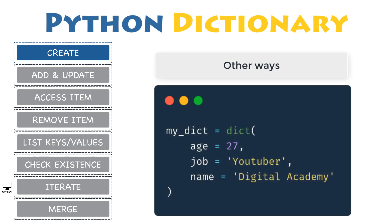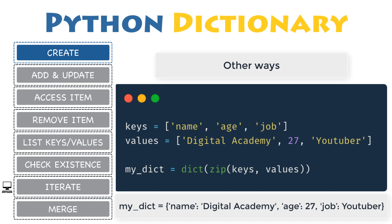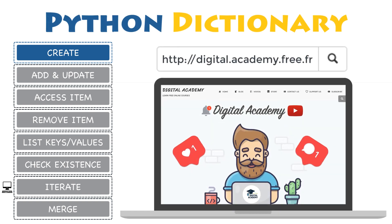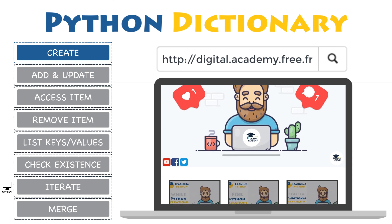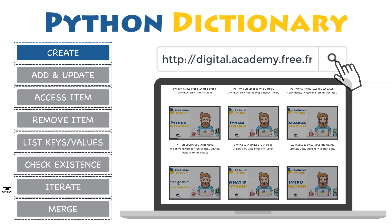There are lots of other ways to create a dictionary. You can convert two-value sequences into a dictionary using the built-in function dict(). You can also use the dict() function along with the zip() function to combine separate lists of keys and values obtained dynamically at runtime. You may also want to create a dictionary with default values for each key. For more detailed examples, check out the post on digital.academy.free.fr.